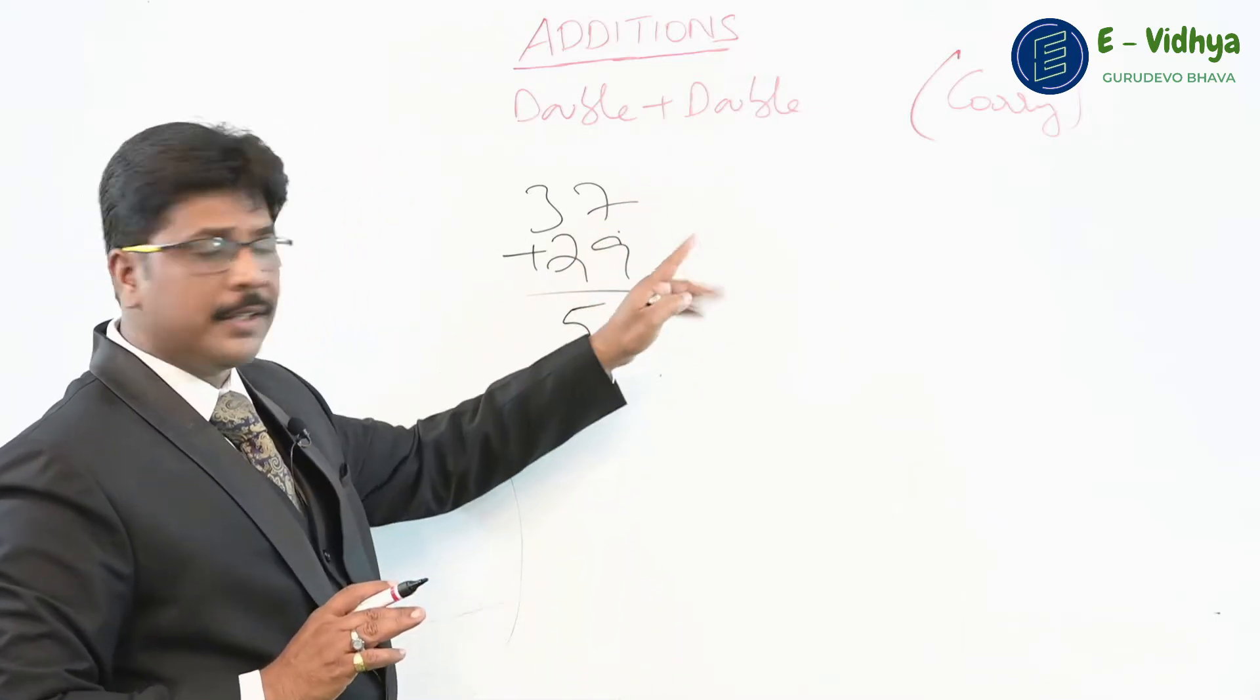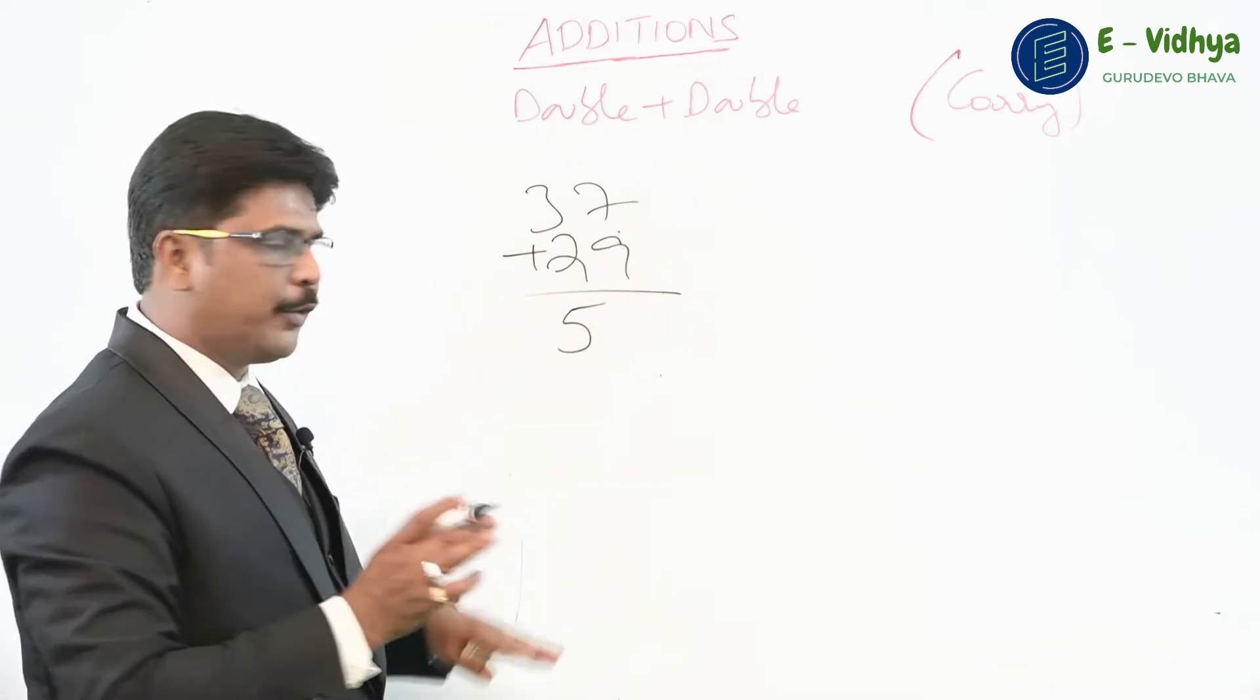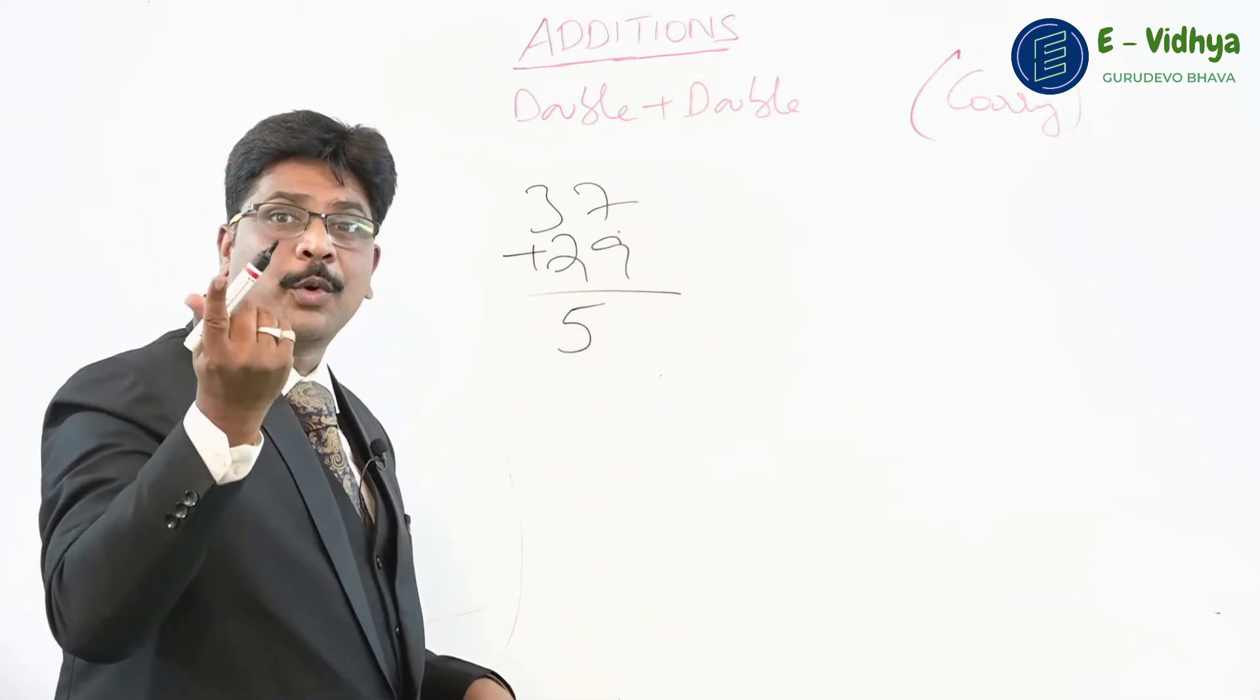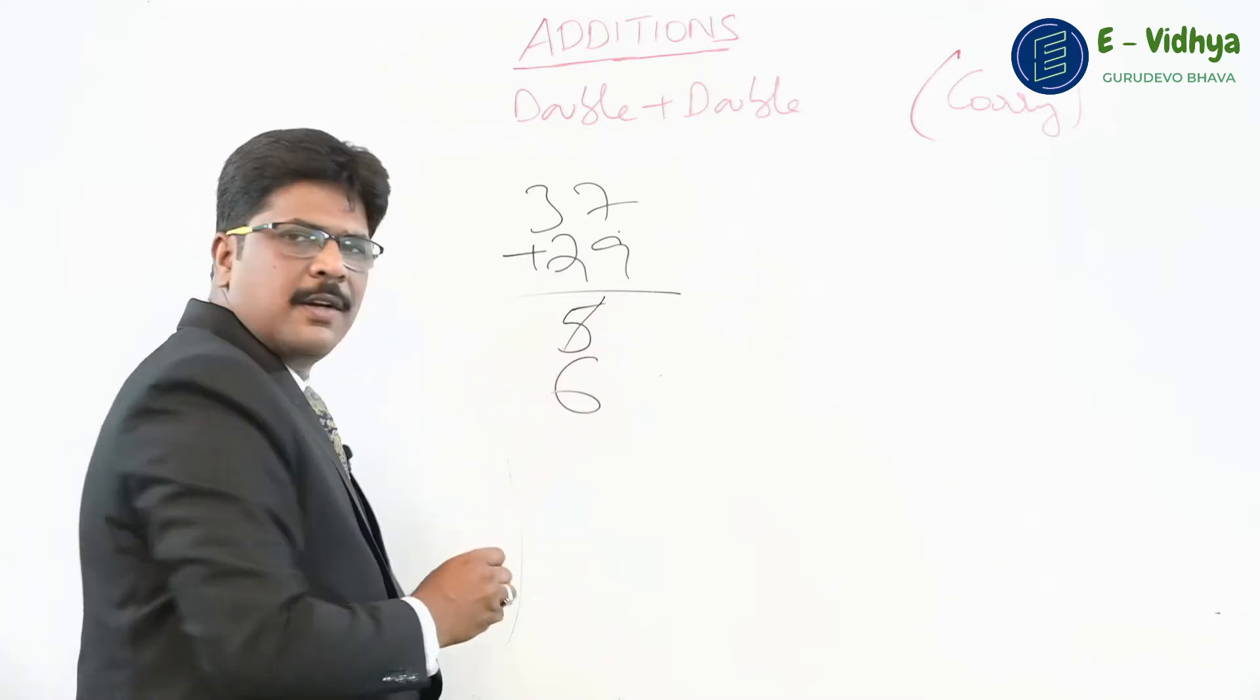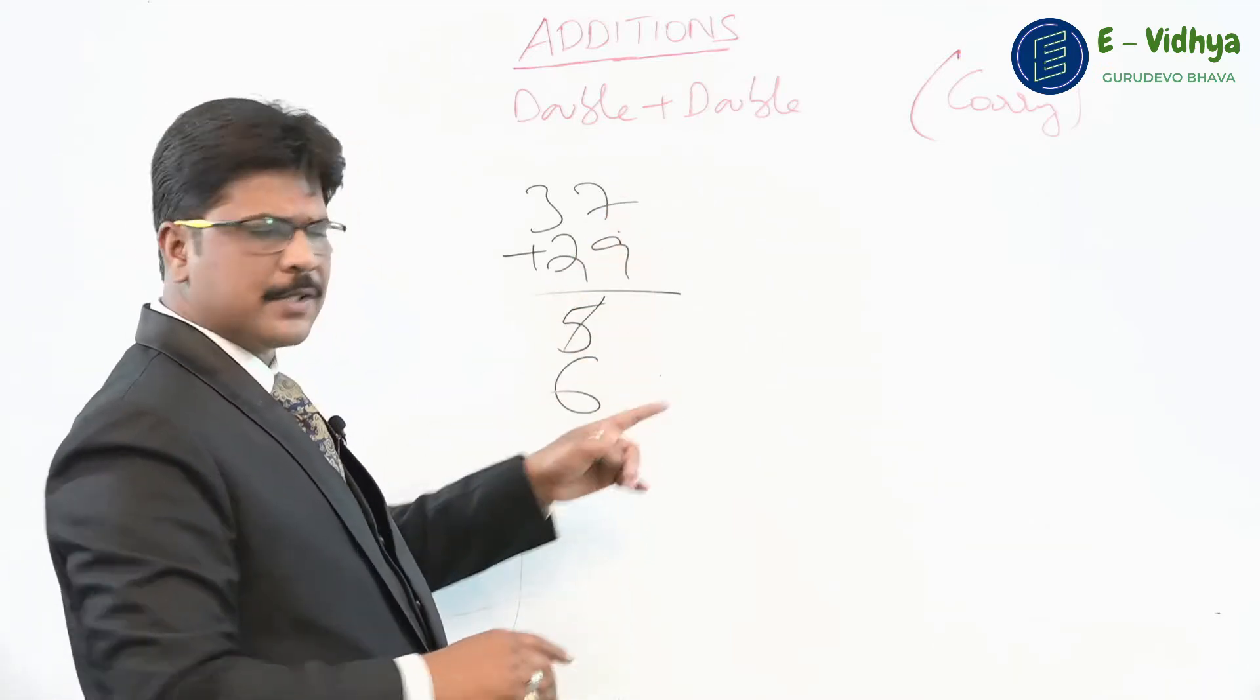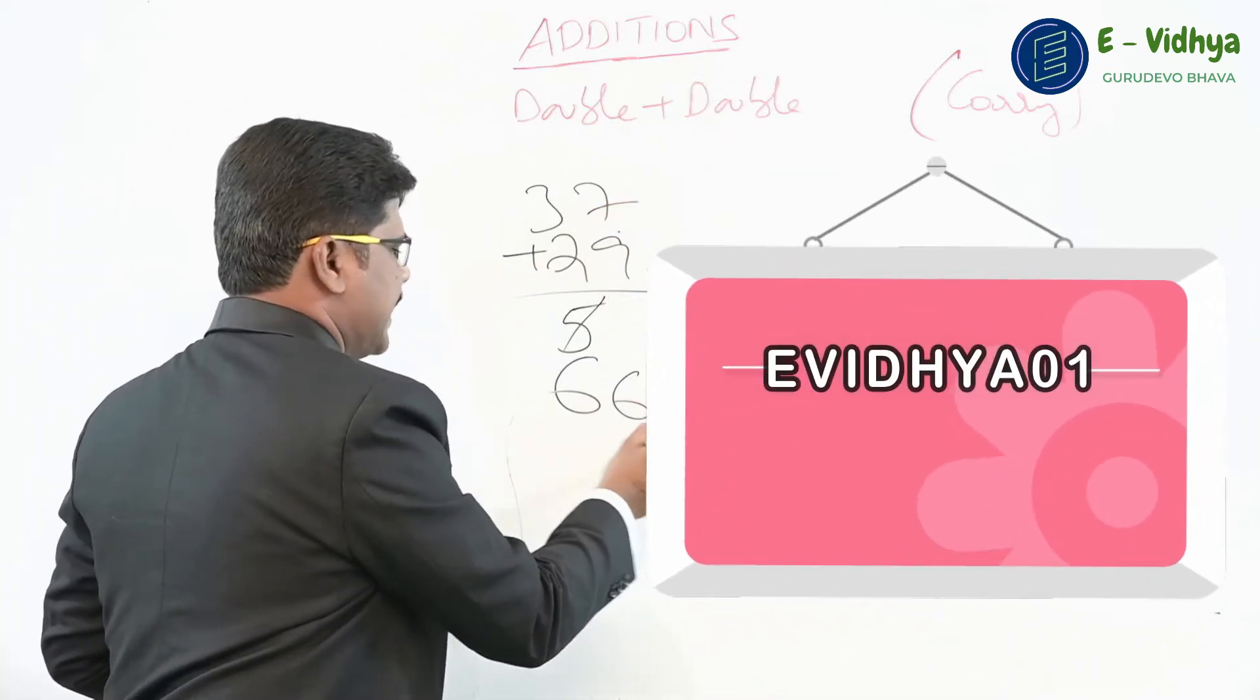Now, observe the next phase. Is it a carry combination or non-carry combination? It is a carry combination. So what do you have to do? Think one number more—ekādhikena pūrvena. So the 5 becomes 6. Now, just think of the end number in the ones place: 7, 9, end number is 6. The answer is 66.